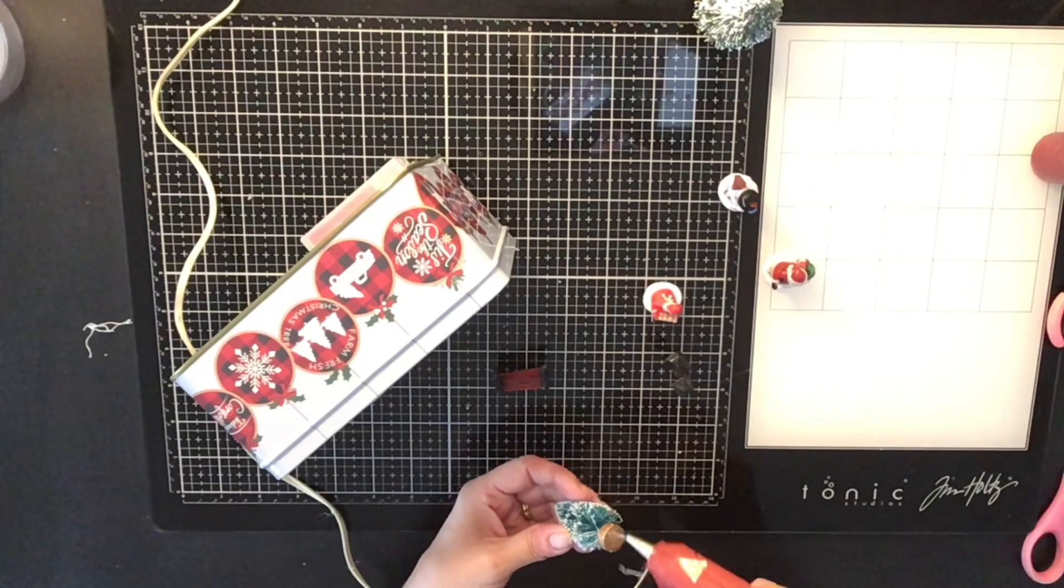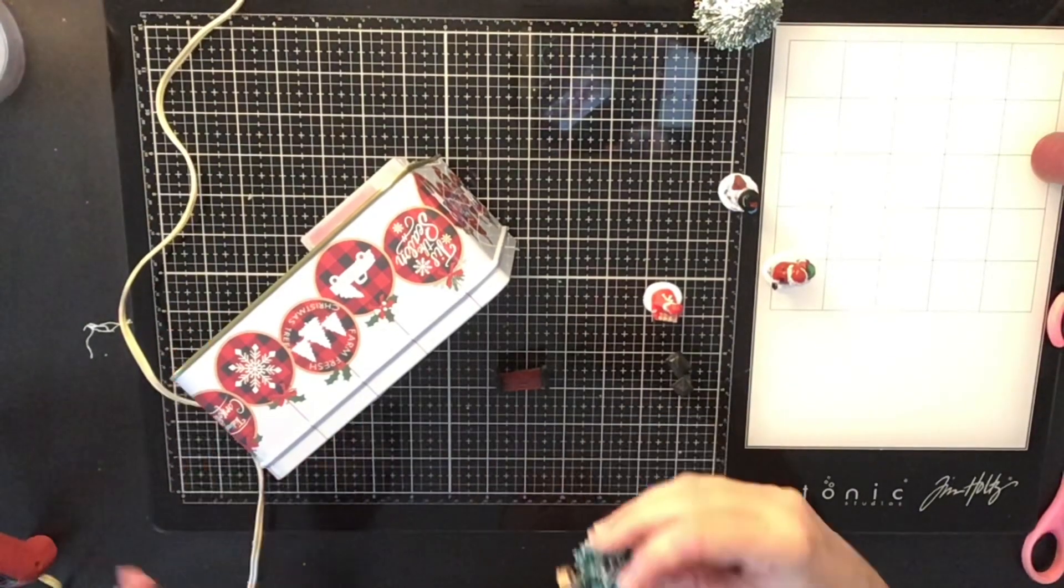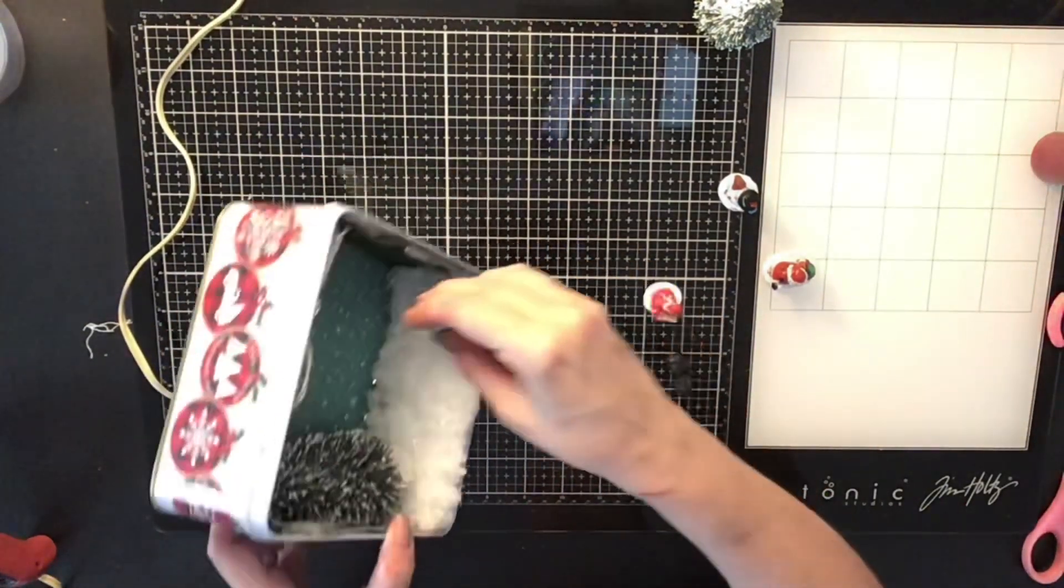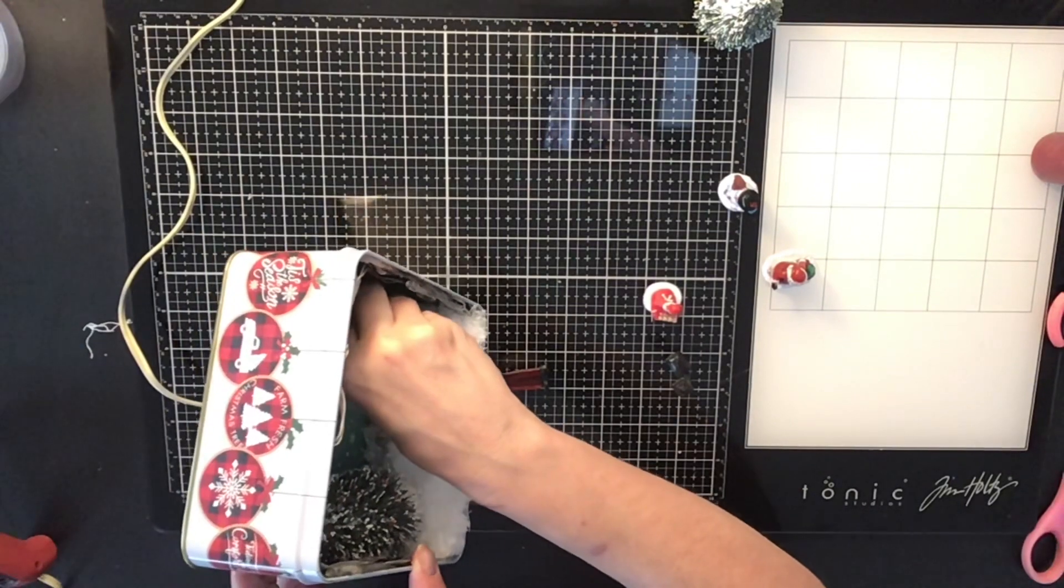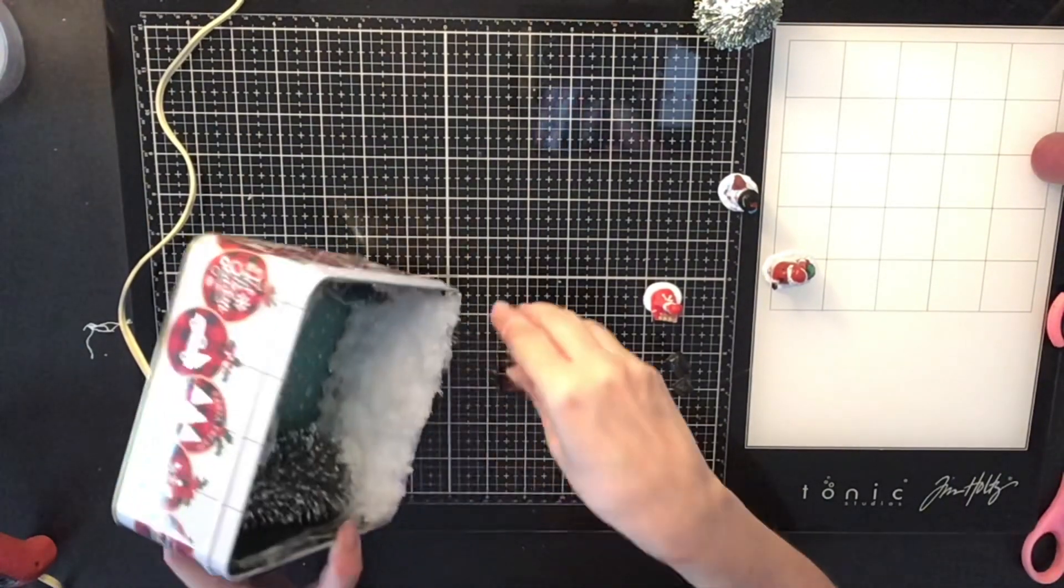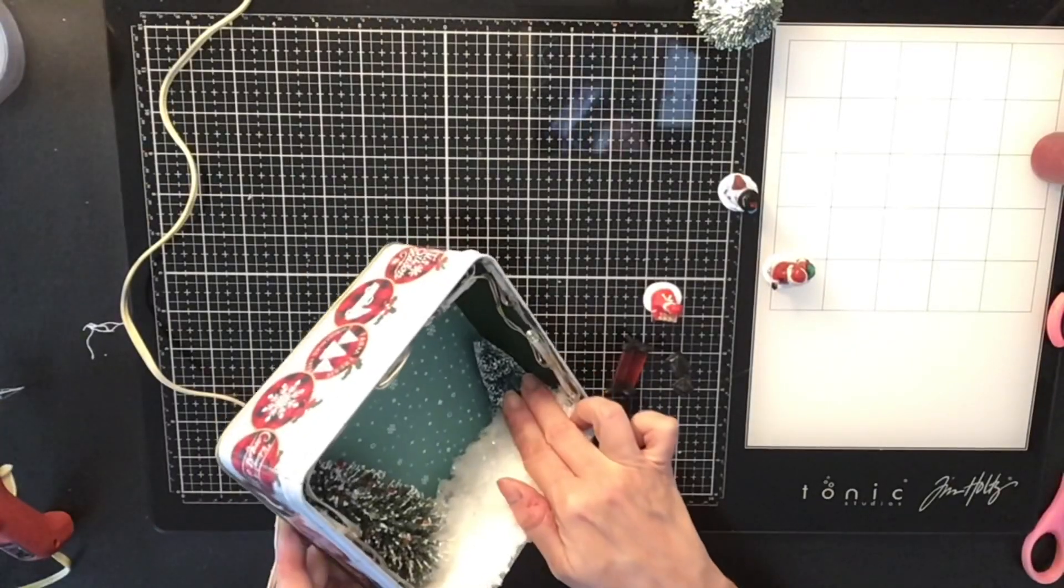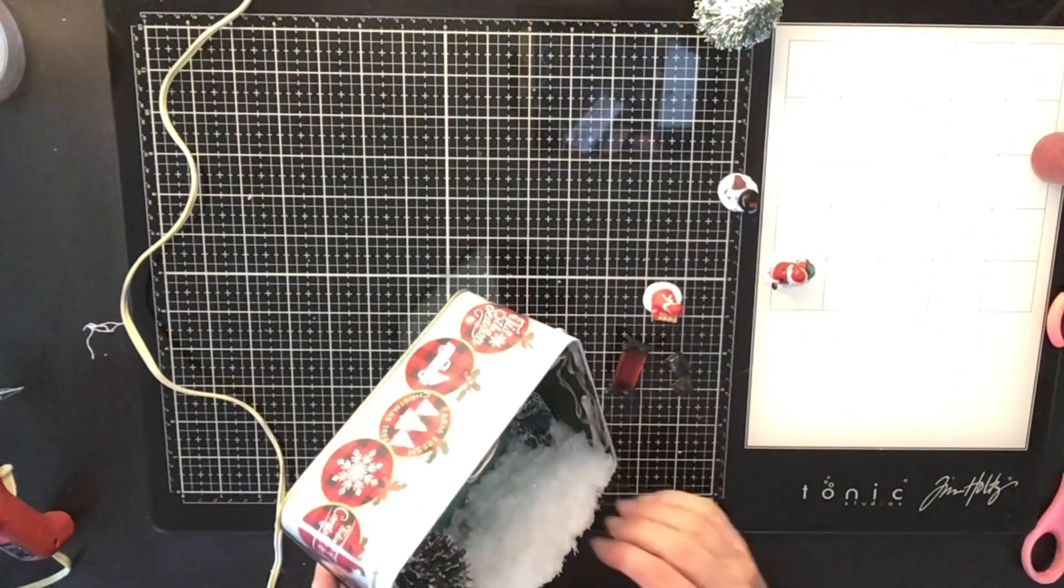So next I took another little tree that I got. Now I got a whole package of these for a buck and they were at the Dollar Tree as well. And it's just a smaller tree. So I have my big tree and my small tree.